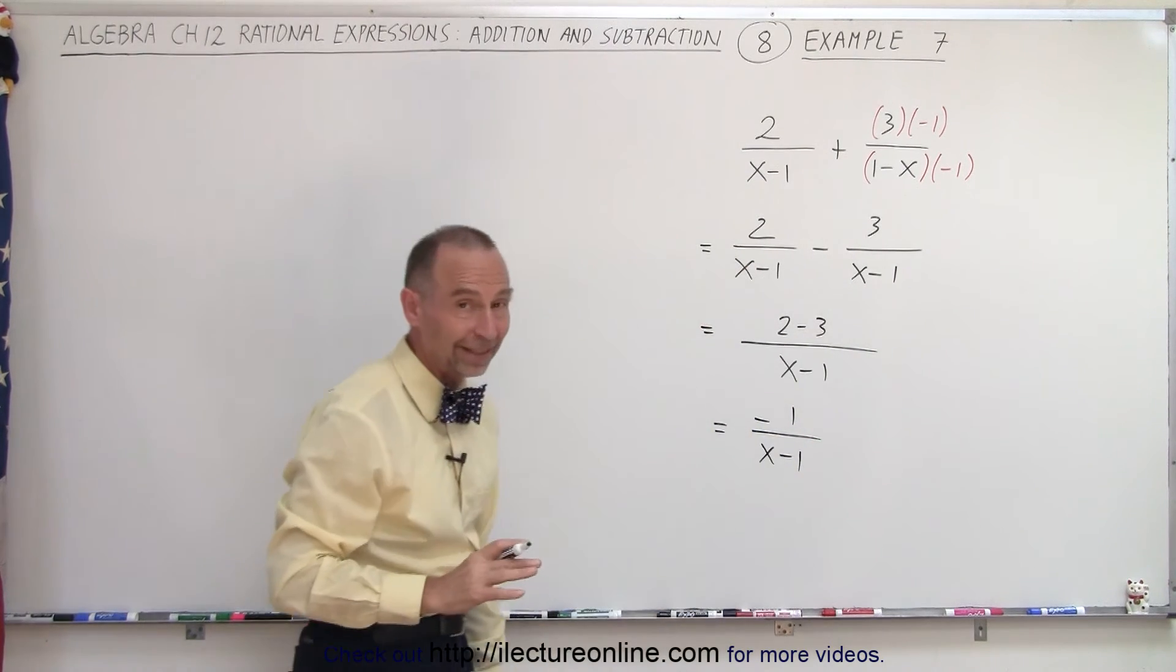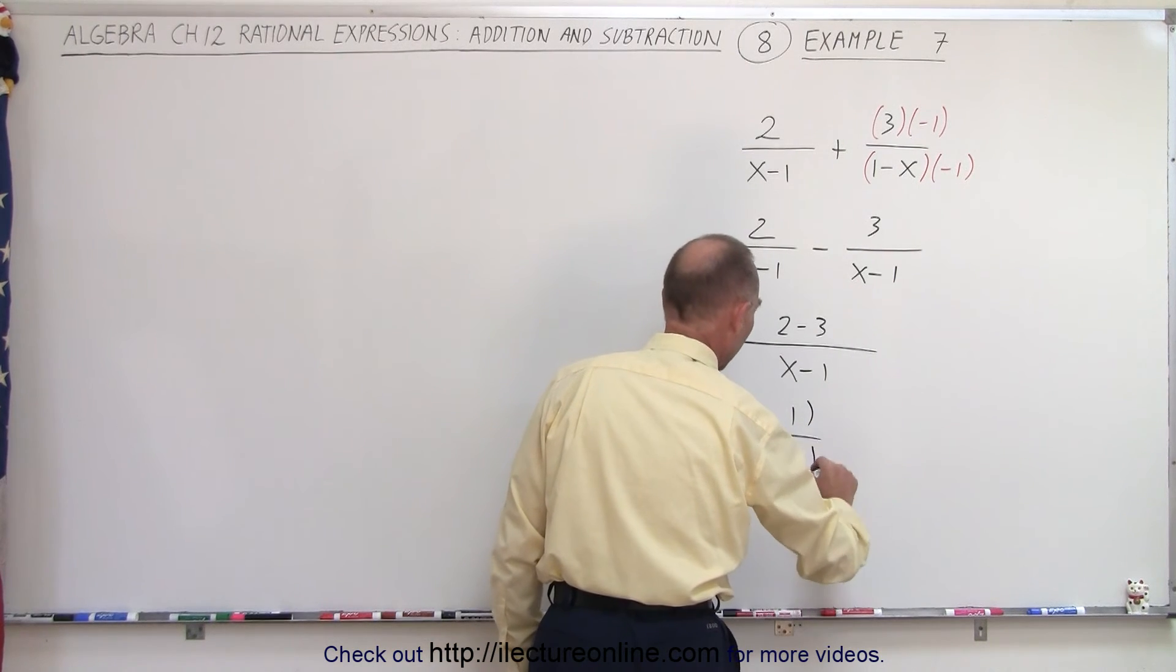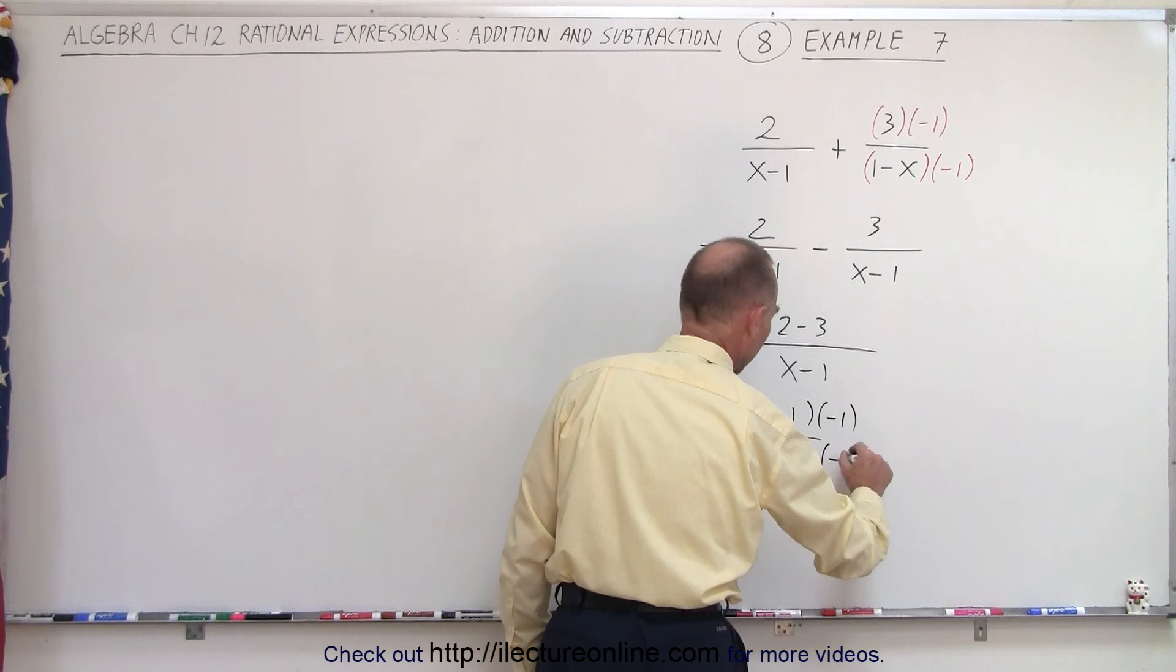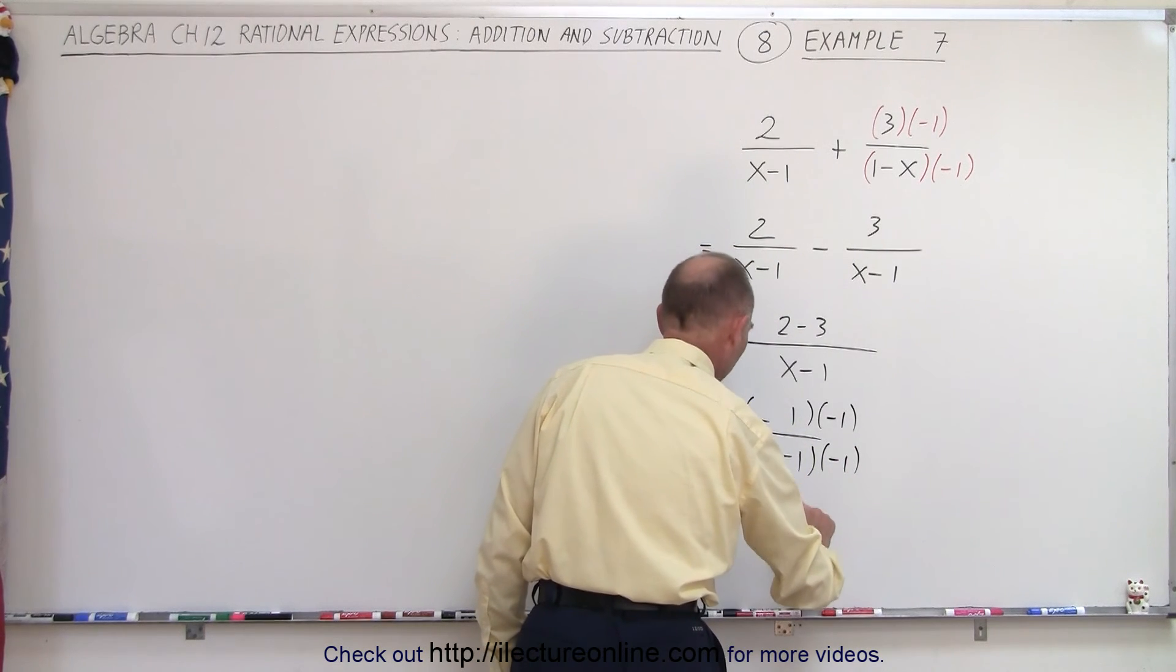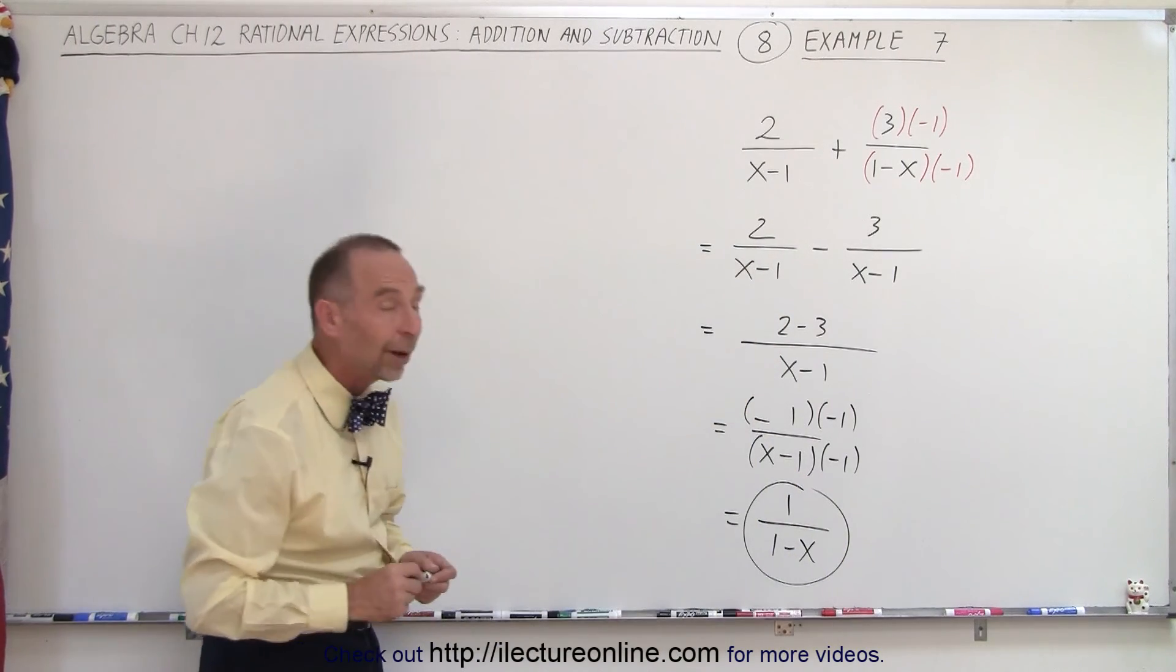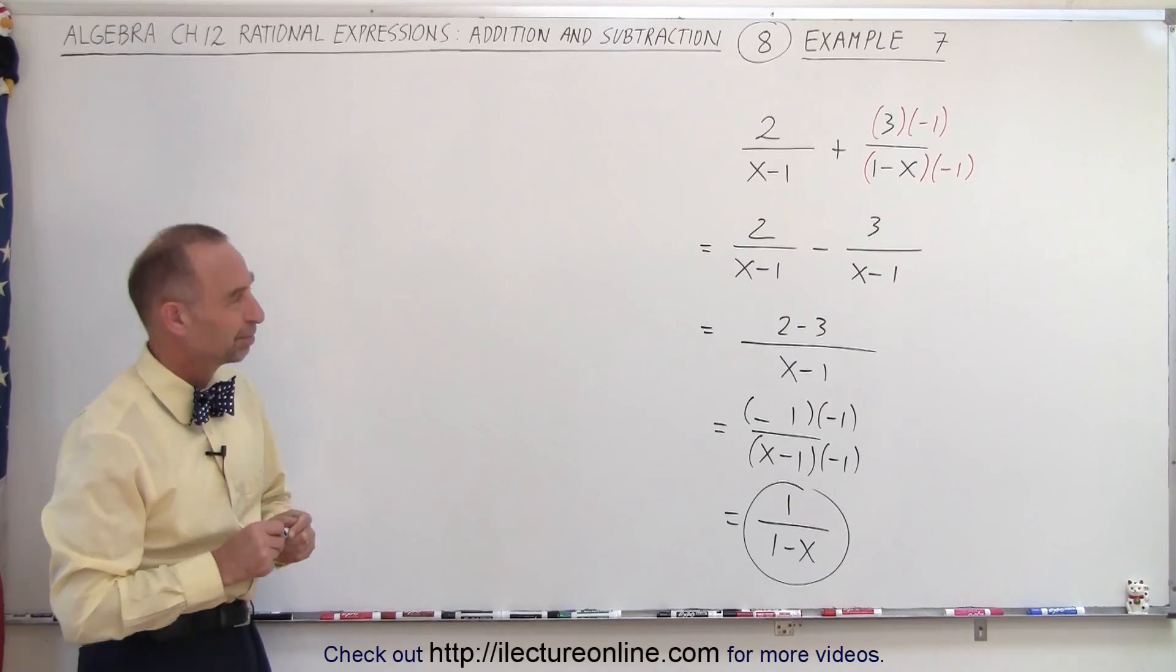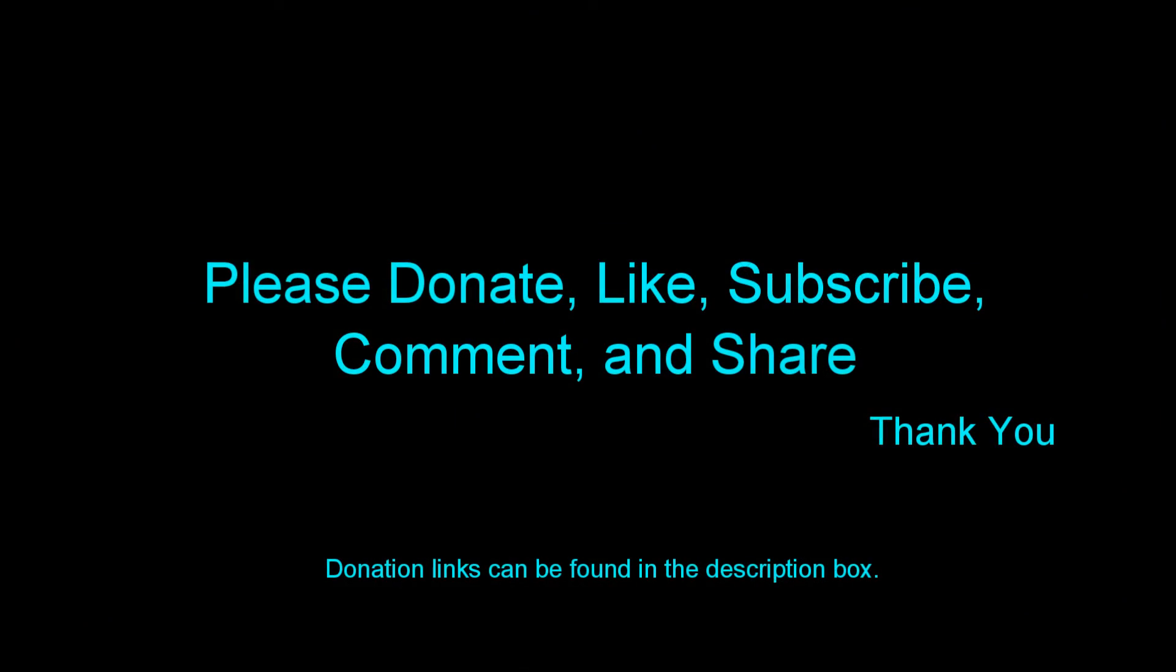And then of course, if you like to get rid of that negative sign, we can again multiply both the numerator and the denominator by negative 1 and then we write this as a positive 1 over 1 minus x. And so that might be the simplest way to write the final answer. And that's how it's done. So thank you.